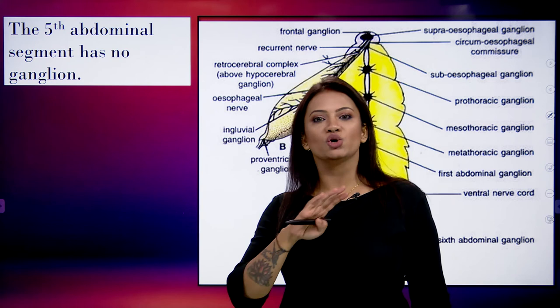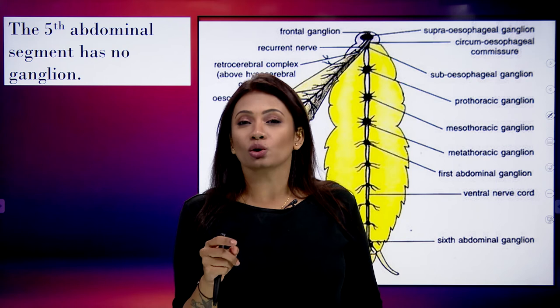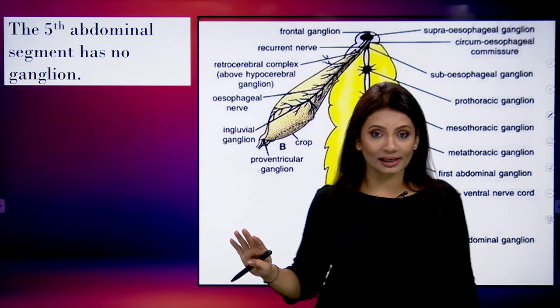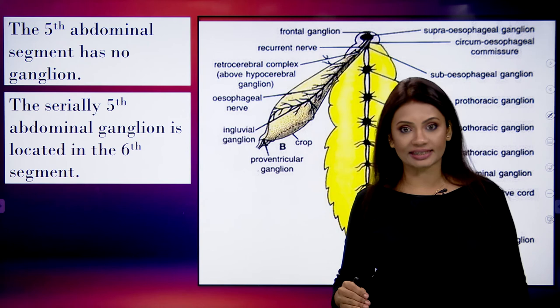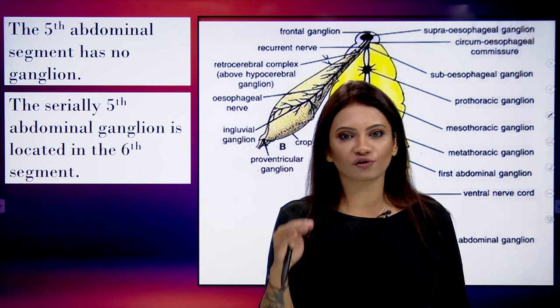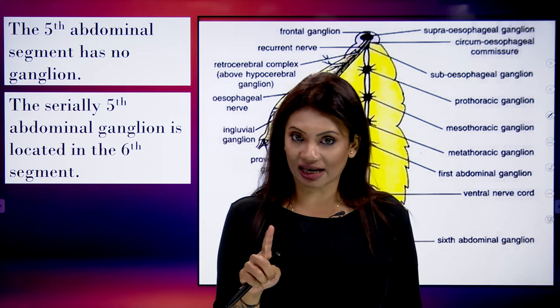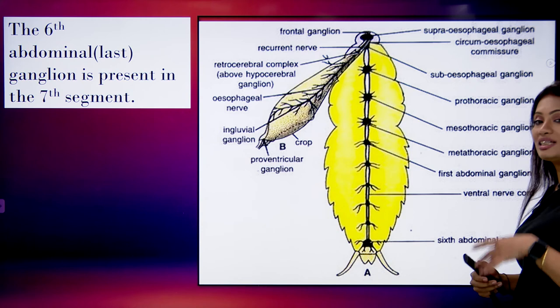Segment number five has absolutely no ganglion. So the fifth ganglion is present in the sixth segment. The sixth ganglion — the last abdominal ganglion — is present in the seventh segment, and it is the largest one.